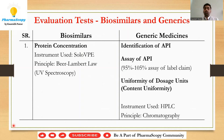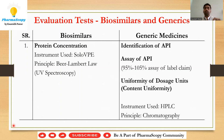Another important test is the uniformity of dosage units, which can be performed by content uniformity as well as weight variation test. We typically go with content uniformity as it is the most widely used for UDU. For example, if we are making a tablet of a fixed dose combination with three APIs — one at 75%, one at 10%, and one at 5% — that 5% API should be uniformly distributed throughout the blend and uniformly present in the finished tablet.